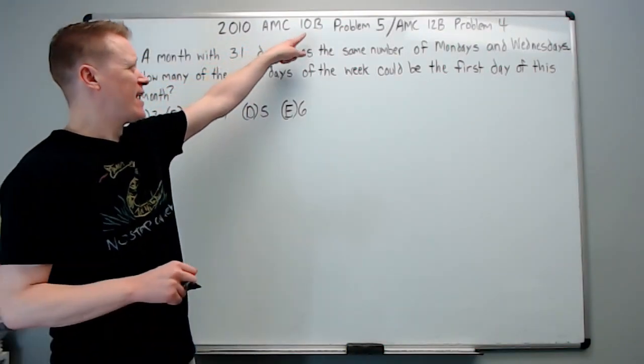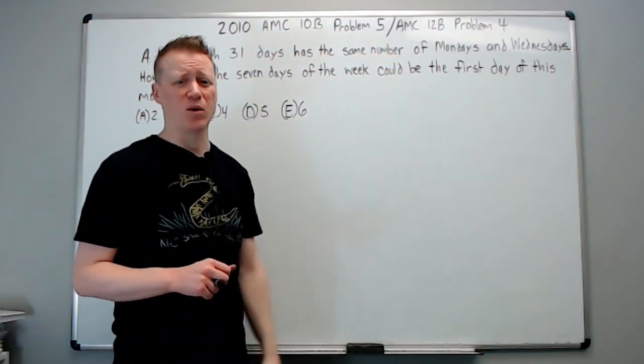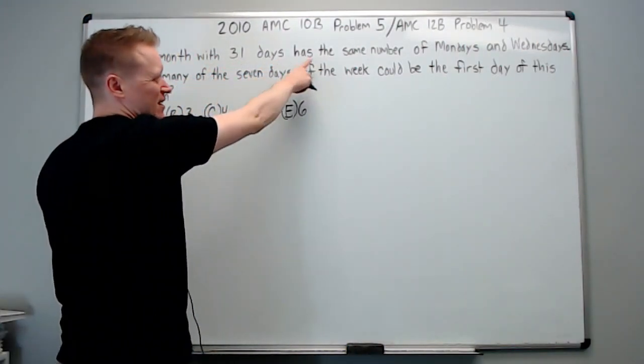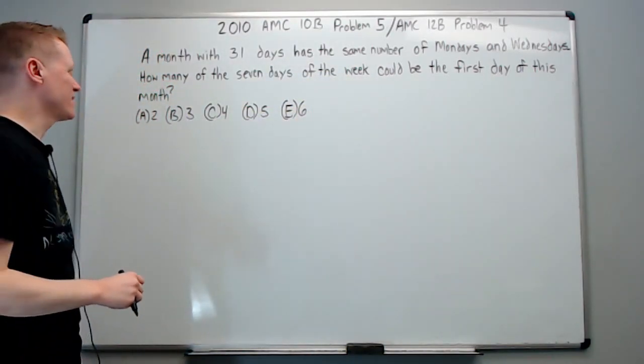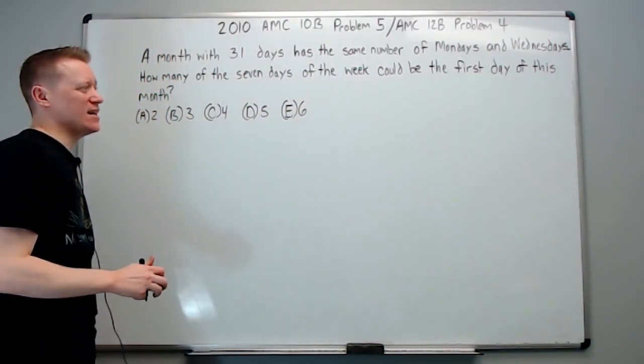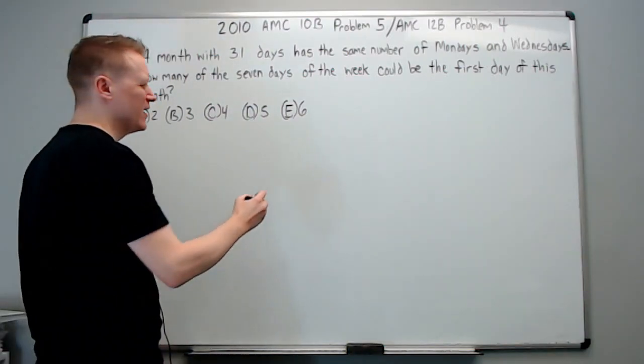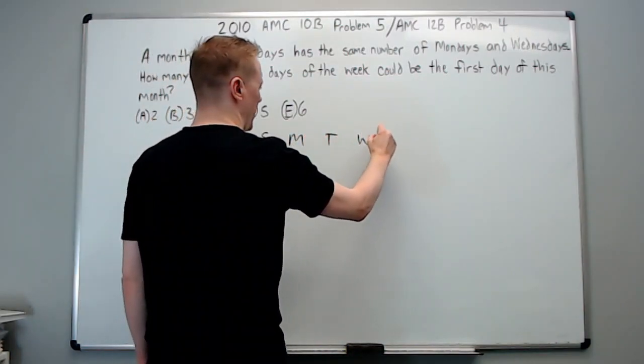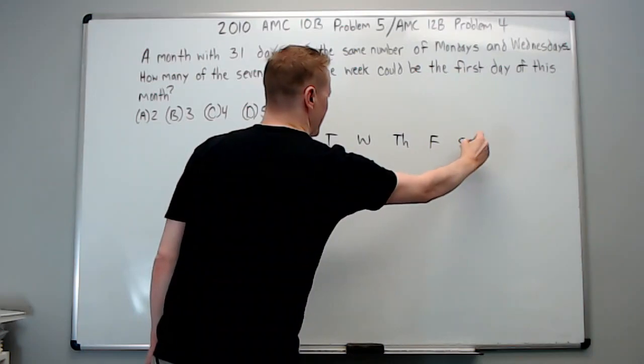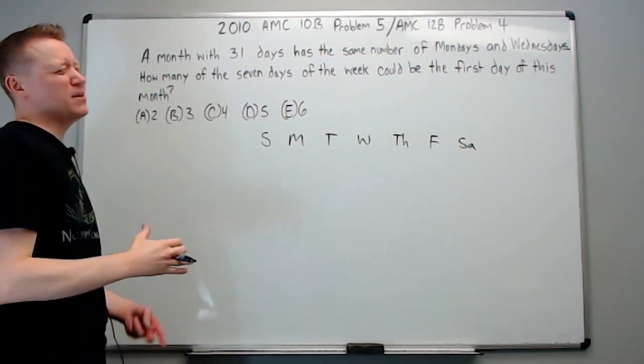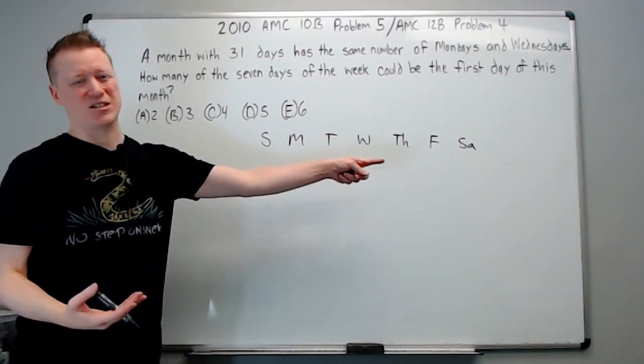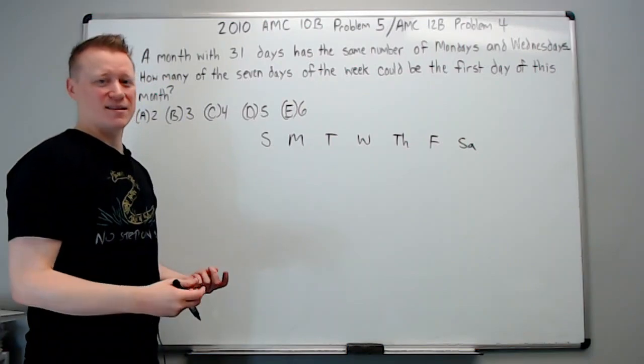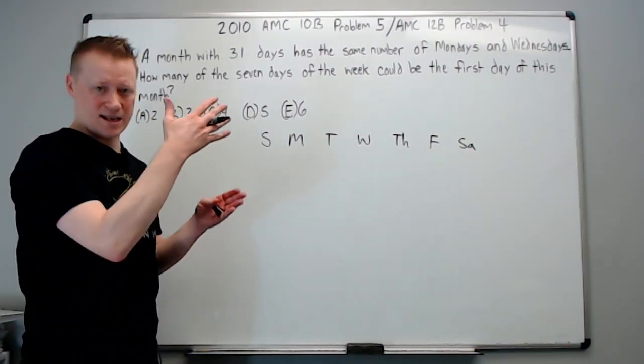Alright, now for the 2010 10B problem number five, which was also the 12B problem four. A month with 31 days has the same number of Mondays and Wednesdays. How many of the seven days of the week could be the first day of this month? Just be careful not to mess this one up. It's not too hard. Sunday, Monday, Tuesday, Wednesday, Thursday, Friday, Saturday. Okay, you probably have done some calendar problems before, and my recommendation is always to make this list and work with it. You should know from 31 days that there's 28 days, and those 28 days are all going to have the same. But the 29th, 30th, and 31st will each occur five times in that month.